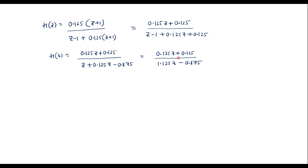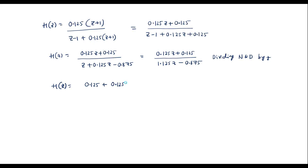Now I will bring this into standard form by expressing in terms of Z inverse. Dividing numerator and denominator by Z: numerator becomes 0.125 + 0.125*Z⁻¹, and denominator becomes 1.125 minus 0.875*Z⁻¹.